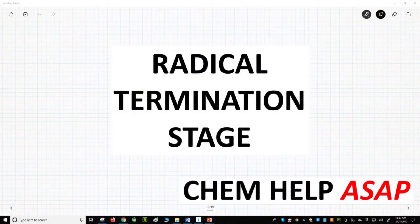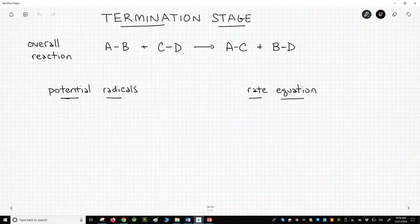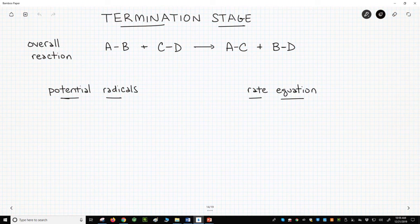Good day from Chem Help ASAP. Let's talk about how radical reactions end through the termination stage. At the top of the screen is our overall mock reaction. The overall reaction occurs through the reactions in the propagation stage.